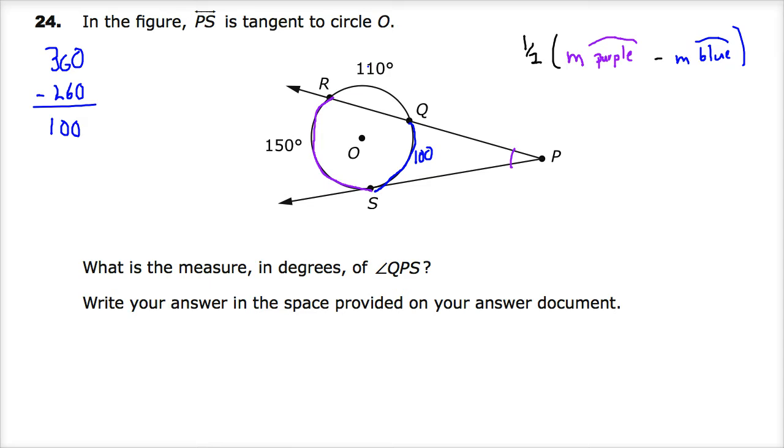So now I'm ready to just do my substitutions here. One half of the measurement of 150 minus 100. So half of 50 is 25 degrees. So there you go.